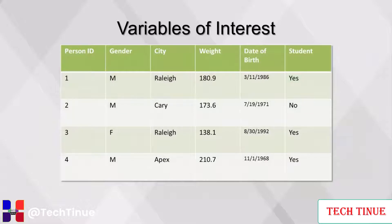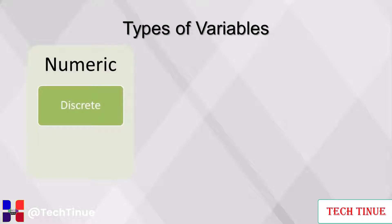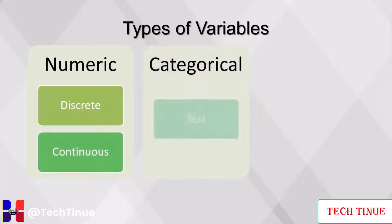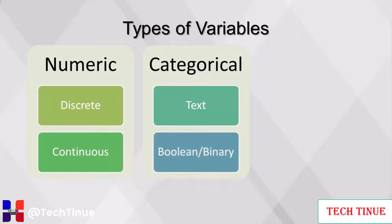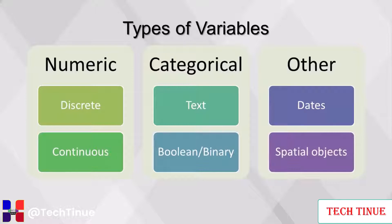Once the variables of interest have been selected, they can be renamed if needed and assigned the proper data type. There are two common variable types: numeric and categorical. Numeric variables include discrete variables, which can include whole numbers used for counting and IDs, and continuous variables, which are numbers with decimals used for measuring. Categorical variables include text, which is any combination of letters, numbers, and symbols, and boolean or binary variables, which contain only one of two possible values. Variables that can be treated as either numeric or categorical include dates and spatial objects such as latitude and longitude.